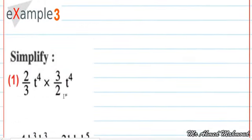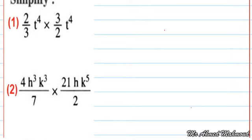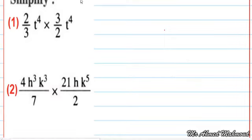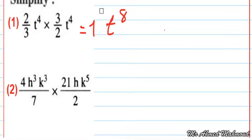Now I'm going to simplify. In simplification, we can use multiplication, division, addition, or subtraction. Here we have 2 over 3 times t power 4 multiplied by 3 over 2 times t power 4. We can use the calculator: 2 over 3 multiplied by 3 over 2 equals 1. And t power 4 times t power 4 equals t to the power of 8. We ignore the coefficient 1 when we have an algebraic factor, so the answer is t to the power of 8.